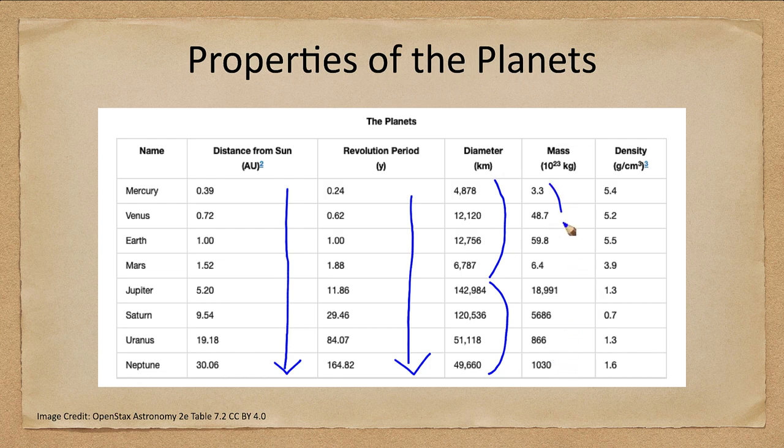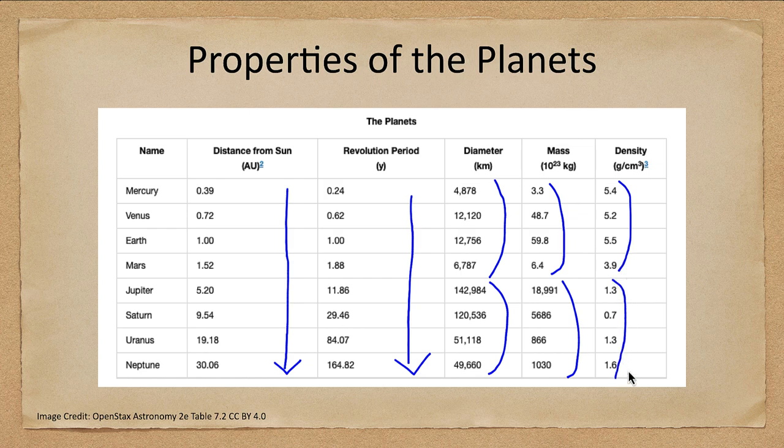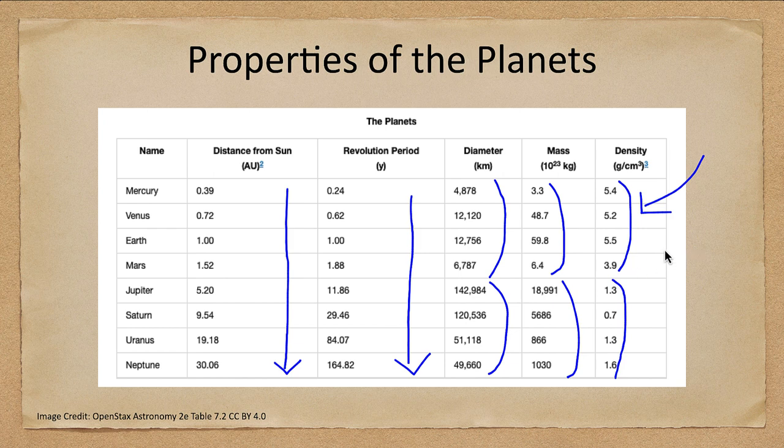And that is by diameter, that is also by mass. You can see that there's a distinct difference there. And there's also a distinct difference in density. Densities are very large in the inner solar system, smaller in the outer solar system, telling us about the composition. These are rocky and metallic materials, whereas the others are more gas and icy material.